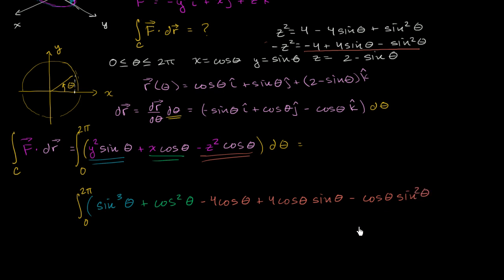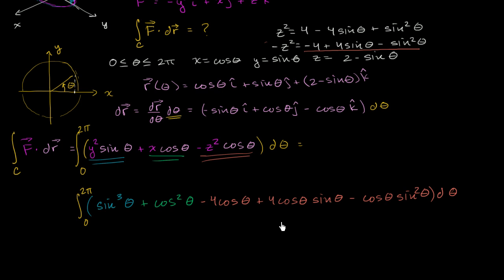So we have our final integral set up, all in terms of theta, integrated from 0 to 2π. Setting up the integral was actually simpler in this case, but the integral itself is a bit more involved and we may need to use some trig identities to evaluate it properly. We can solve it, and in the next video we'll work on actually evaluating this integral.